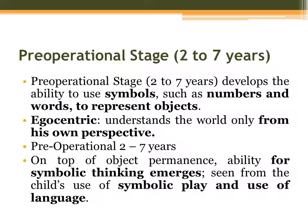Now let's go to the pre-operational stage — two to seven years old. According to Piaget, during this stage the child develops the ability to use symbols such as numbers and words to represent objects. The child will start to use names and recognize numbers. They will start to recognize symbols — like recognizing that a certain shape represents the number one.